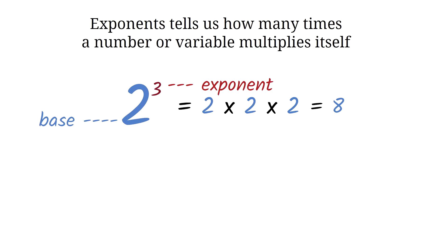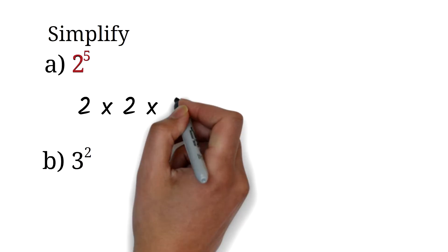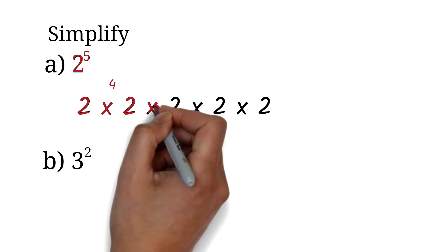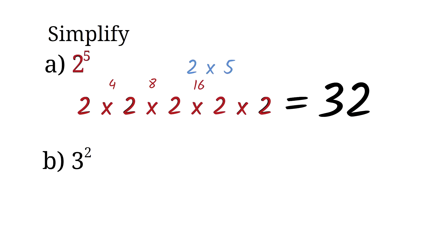Let's take some examples and simplify these expressions. For 2 exponent 5, we can think of it as 2 multiplied by itself 5 times. So 2 exponent 5 equals 2 times 2 times 2 times 2 times 2. Please note that this is not the same as 2 times 5, which will be 10.